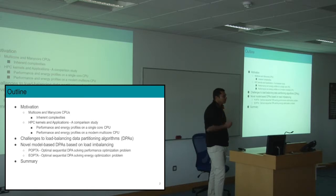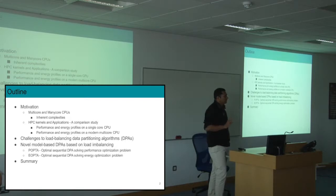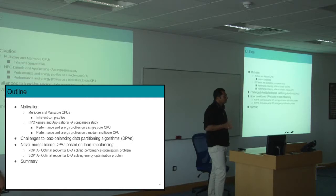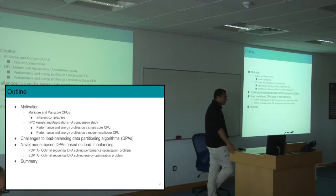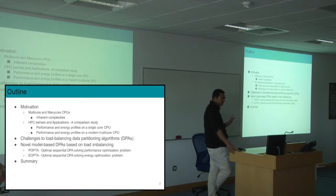I'll illustrate these complexities using HPC kernels and applications. I'm going to take two kernels: matrix multiplication and Fourier transform — these are the most well-known core kernels used in HPC. I'll also use a real-life application, a weather forecasting application used in Europe, mainly developed in Poland. I'm going to compare and contrast performance and energy profiles and show how drastically they have changed because of these new complex platforms.